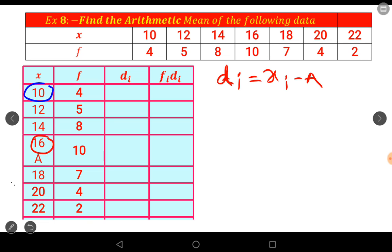The first class observation is 10. 10 minus 16 equals minus 6. Next, 12 minus 16 is minus 4, 14 minus 16 is minus 2, 16 minus 16 is 0, 18 minus 16 is 2, 20 minus 16 is 4, 22 minus 16 is 6. Deviation d_i equals x_i minus A. Next one, find f_i times d_i.